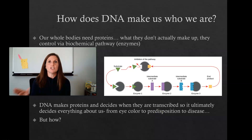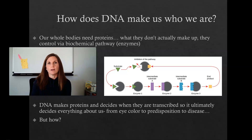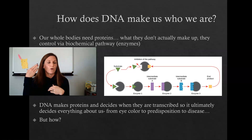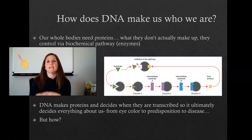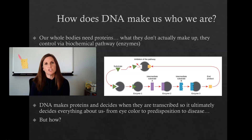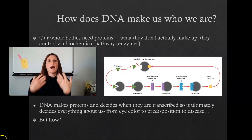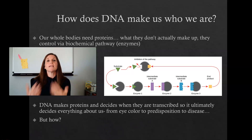We know from our previous chapters on genetics, DNA replication, and the cell that DNA makes us who we are. Whether you have green eyes or blue eyes or brown eyes is inherited in your genes, as are attached earlobes, a widow's peak, color blindness, or hemophilia. What we haven't pieced together yet is how DNA ultimately drives and creates those traits within our body.